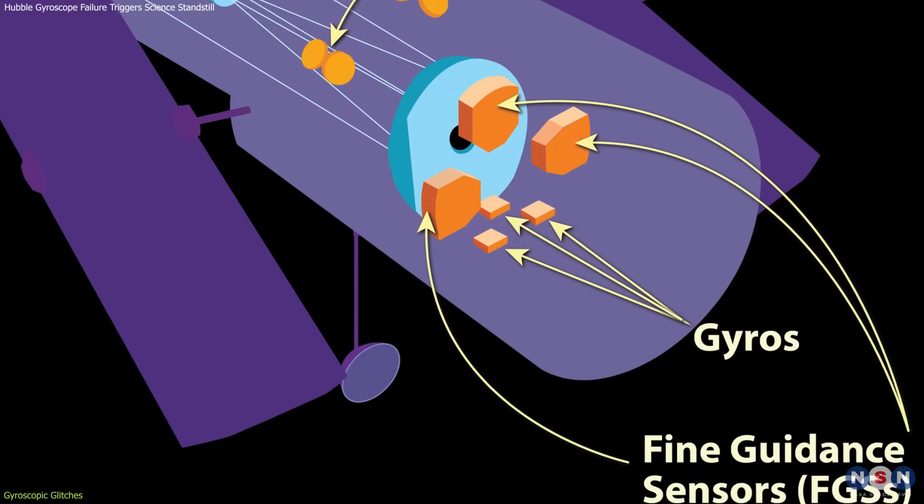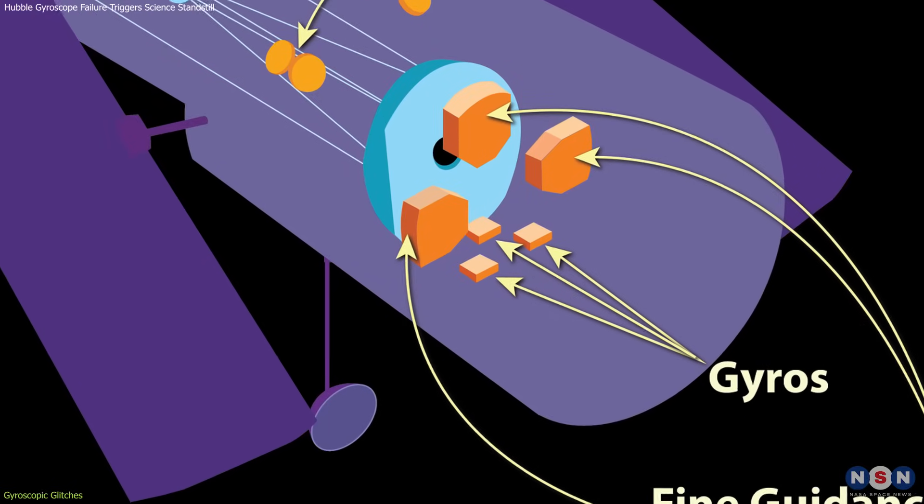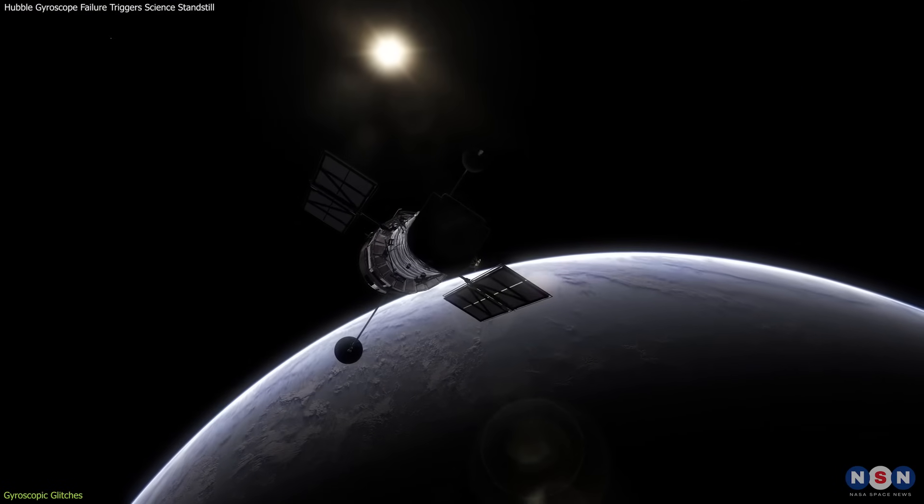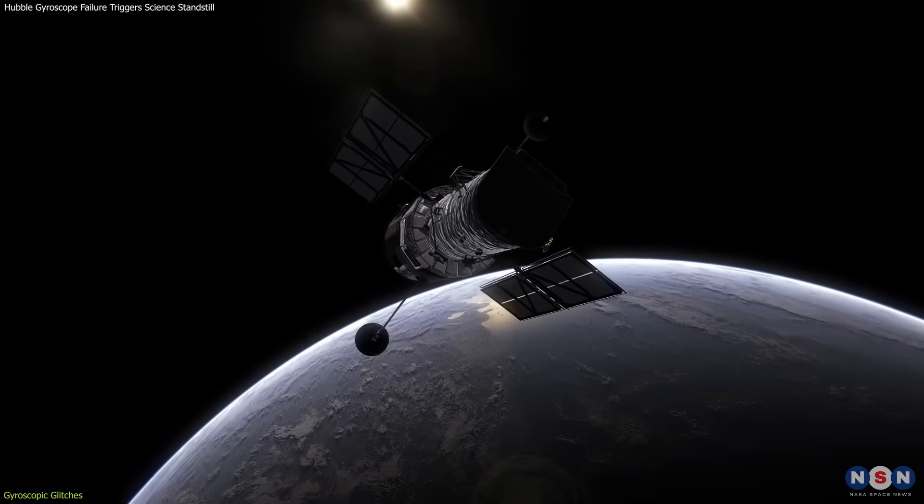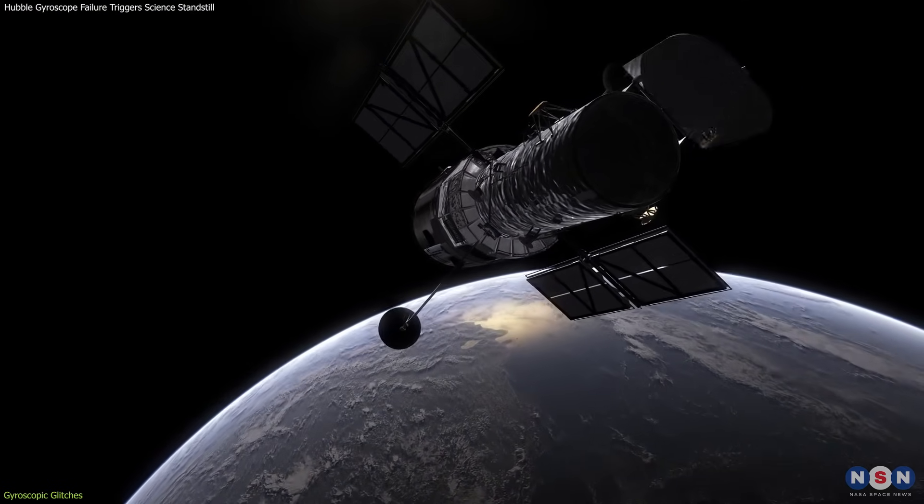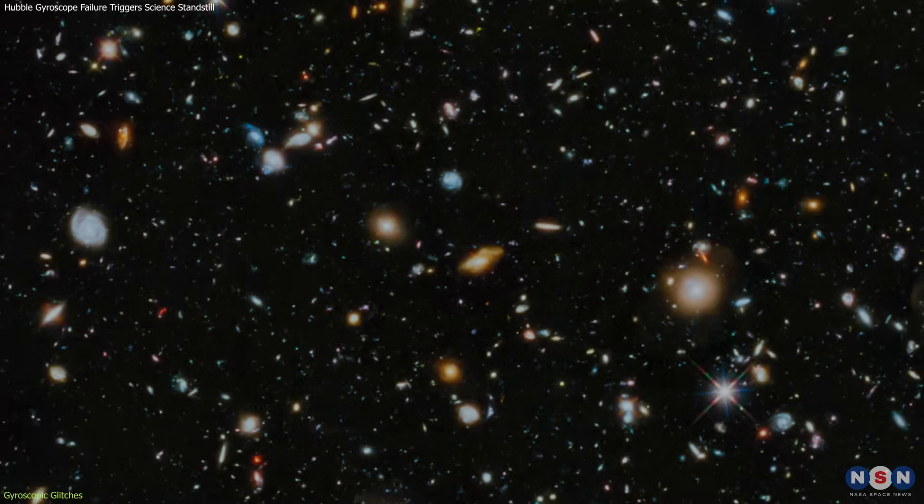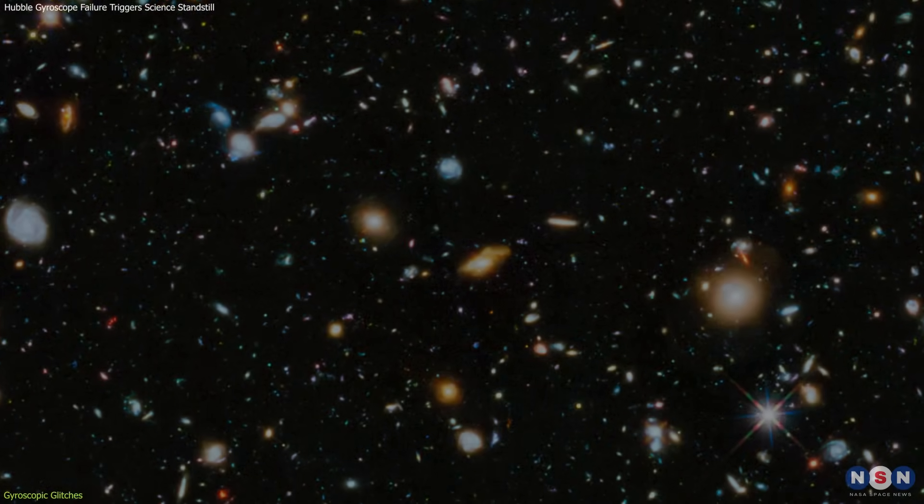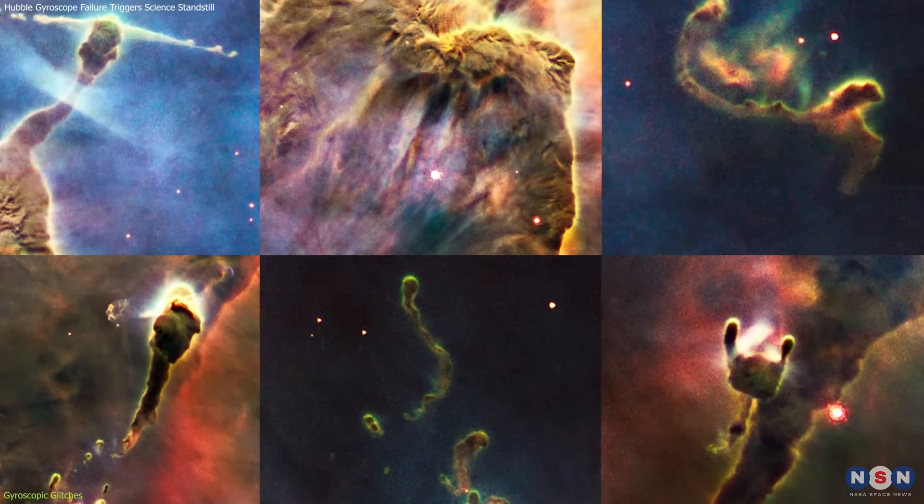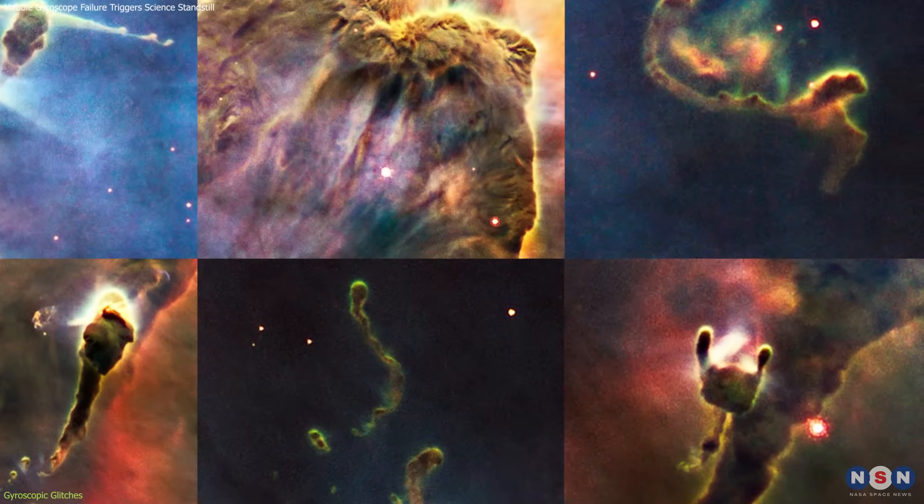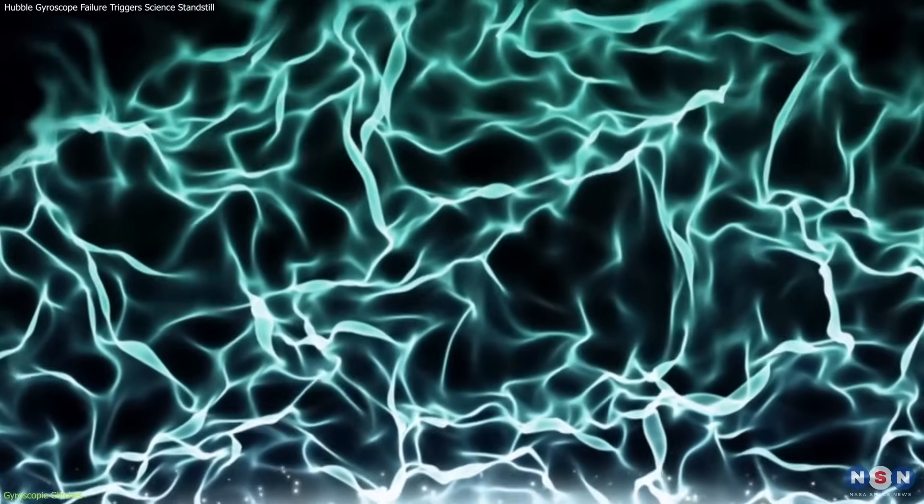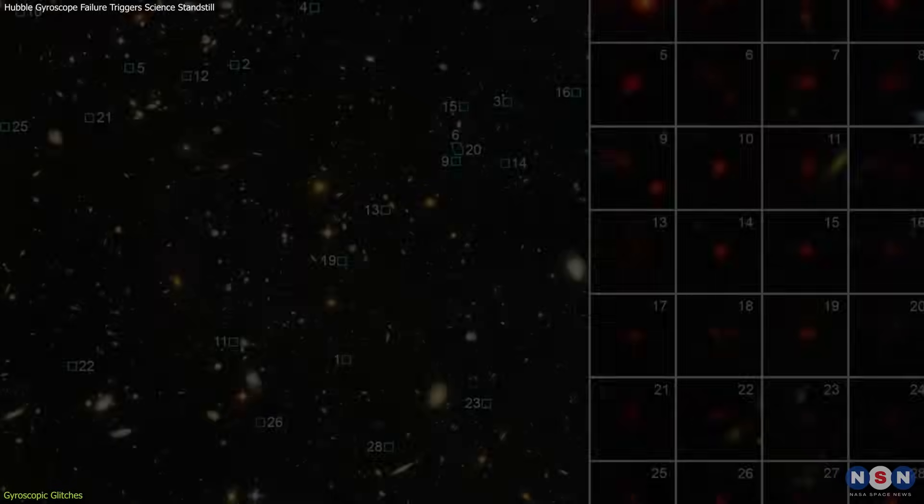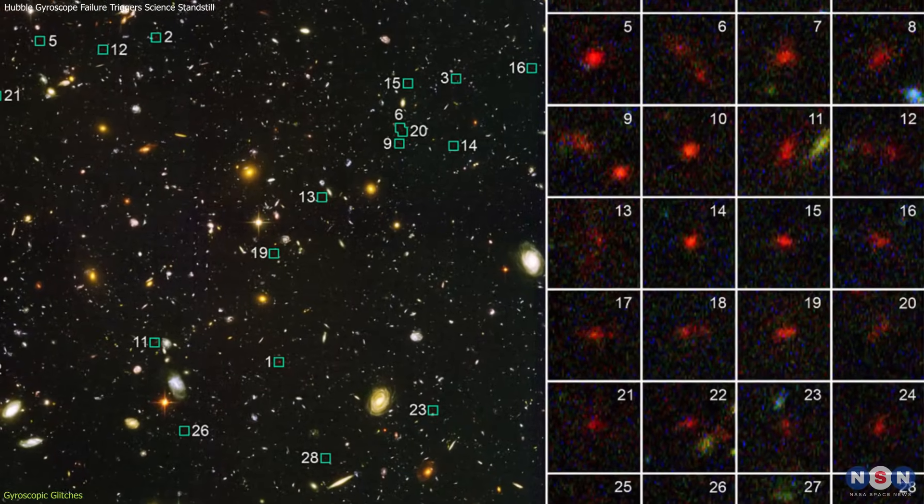The importance of gyroscopes to Hubble cannot be overstated. They measure the rate of rotation and ensure the telescope can maintain its position to focus on astronomical targets. This precision is crucial for the deep space observations that have led to some of the most groundbreaking astronomical discoveries of the last three decades, from confirming the existence of dark energy to capturing the earliest galaxies in the universe.